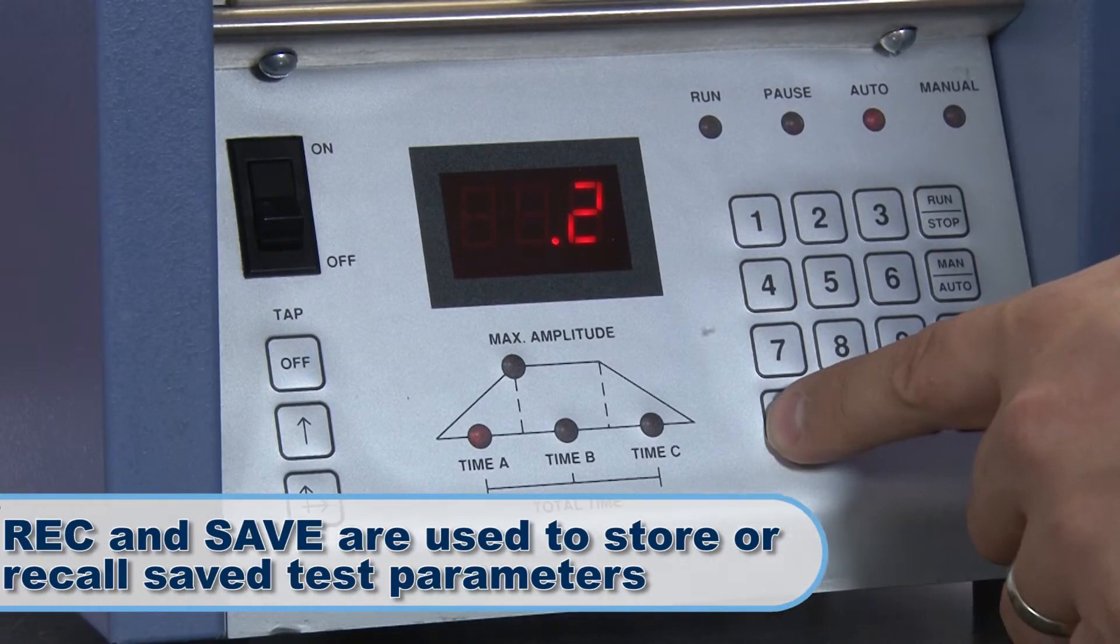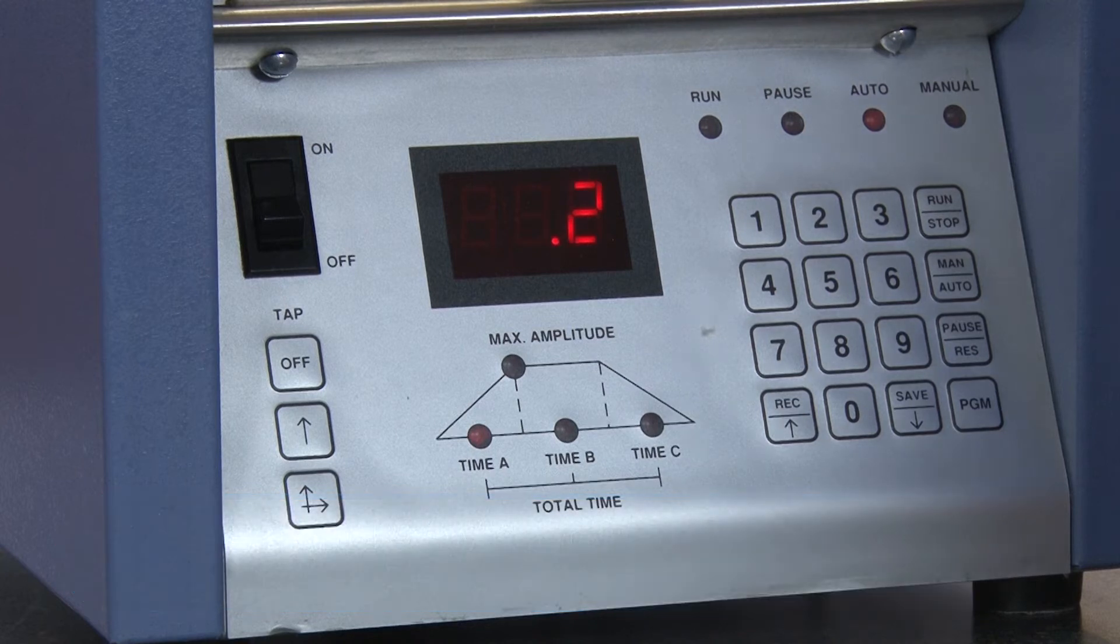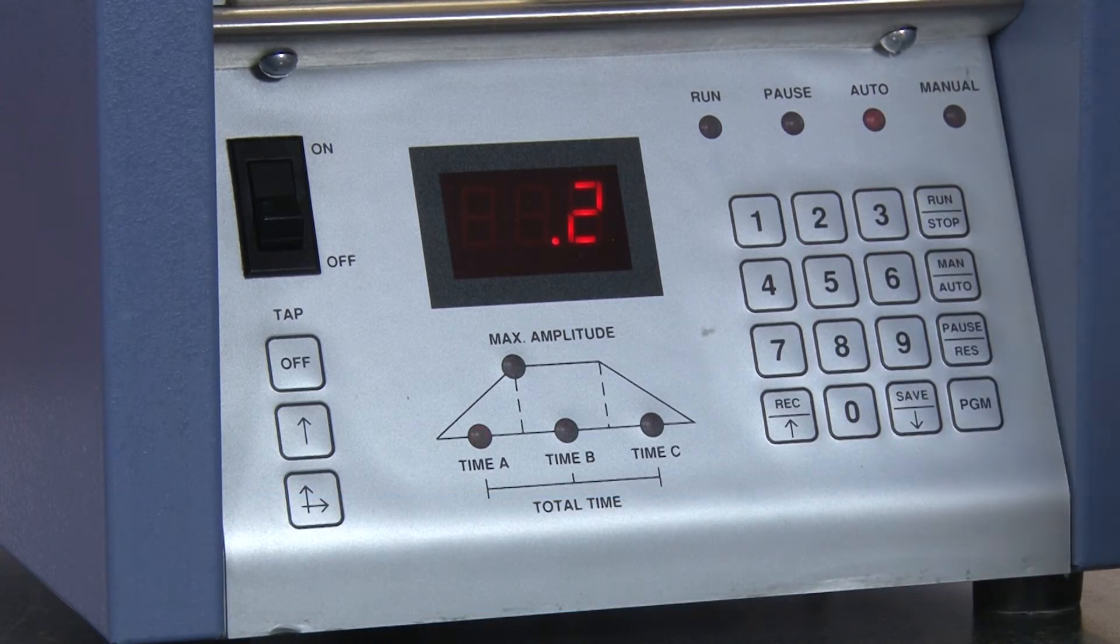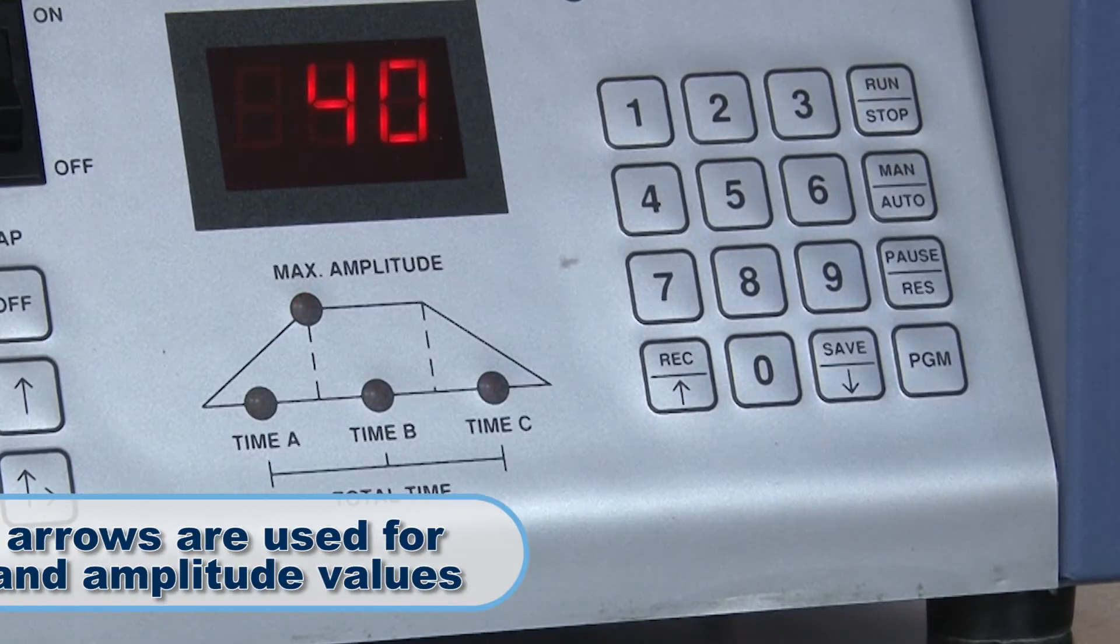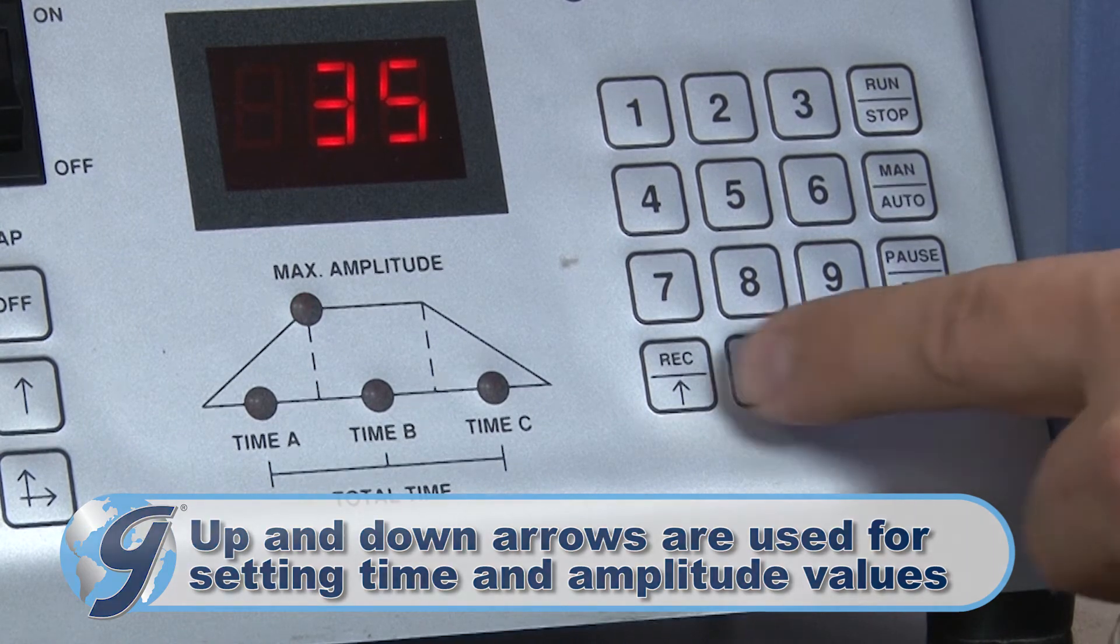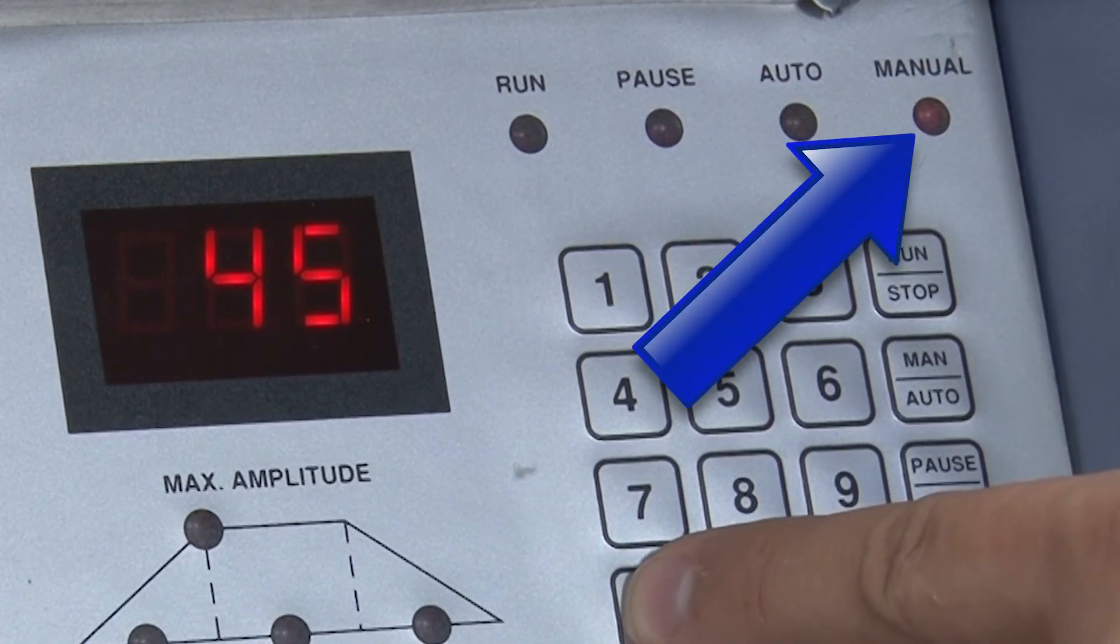The Recall and Save buttons are used to store and recall previously saved test parameters. These functions are enabled in the Automatic mode. Alternatively, the Up and Down arrow functions are used for setting time and amplitude values and are enabled in the Manual mode.